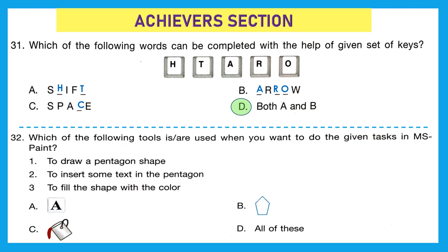Question 32: which of the following tools are used to do the given tasks in MS Paint? Task 1 — draw a pentagon shape, done with option B (pentagon shape tool). Task 2 — insert text in the pentagon, done with option A (text tool). Task 3 — fill a shape with color, done with option C (color bucket). So A, B, and C are all needed. The correct option is D, all of these.